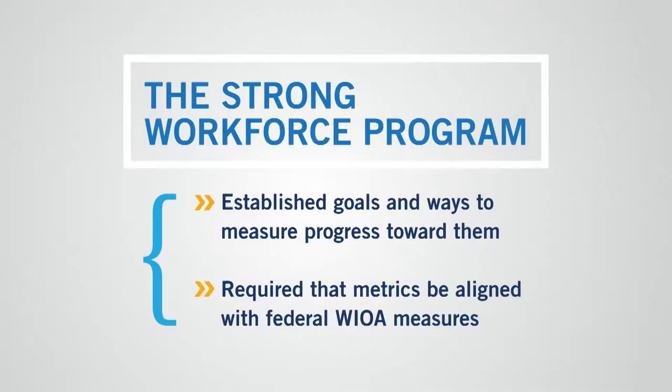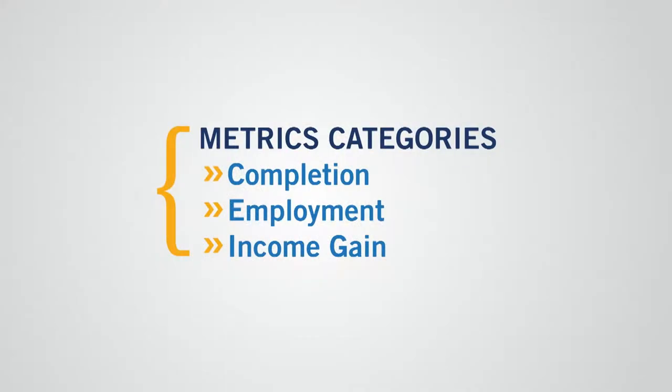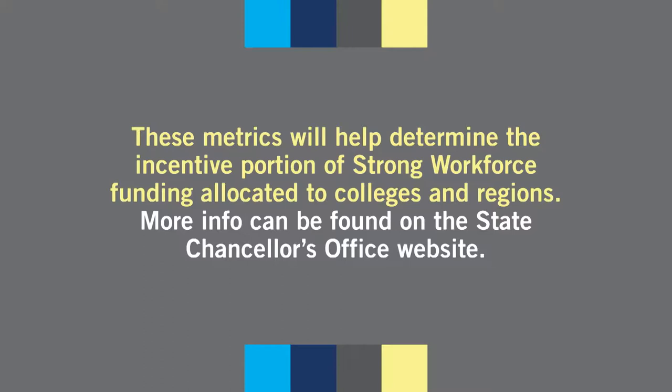CTE is also accountable to the Strong Workforce Program, which the legislature passed in 2015. This is where the more and better CTE goals come from. The initiative established the goals and put in place ways to measure progress towards them. The legislature also asked that, to the degree possible, the metrics be aligned with the Federal WIOA measures. The Strong Workforce Program includes nine metrics which can be grouped into three categories: Completion, Employment, and Income Gain. The Employment and Income Gain categories add a new dimension in accountability for California community colleges. These help us understand the impact completing a program has on a student's ability to secure a job and earn a higher income. These metrics will be used starting in the 2017-18 fiscal year to help determine allocations for the portion of Strong Workforce Funding that goes to colleges and regions. More information about Strong Workforce measures can be found on the State Chancellor's Office website.